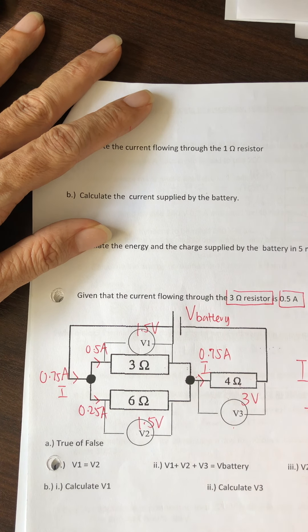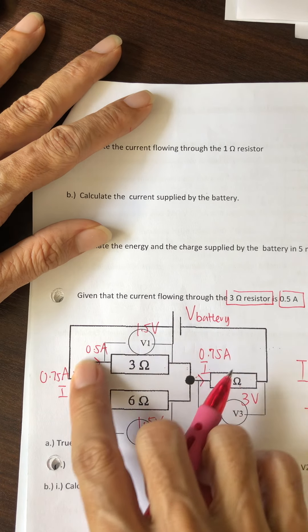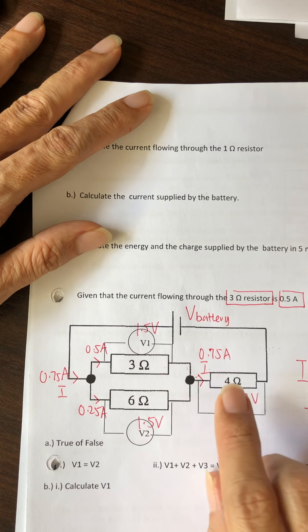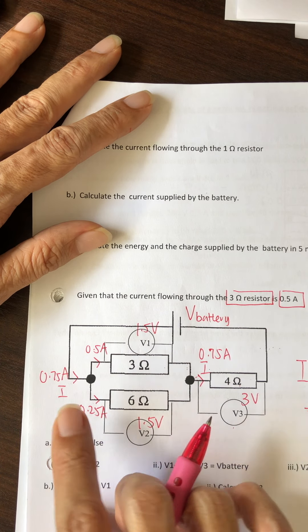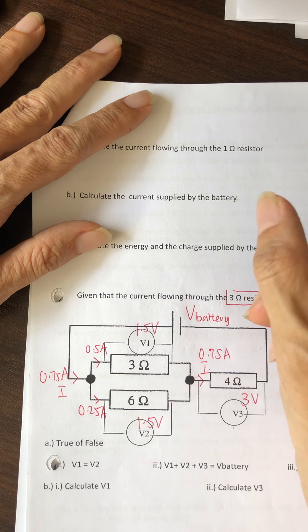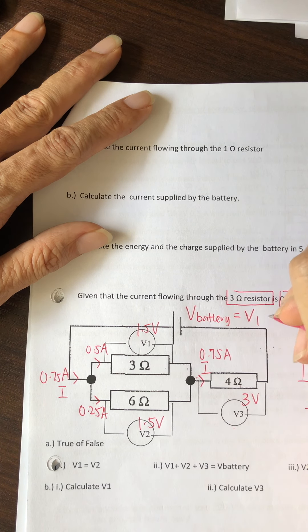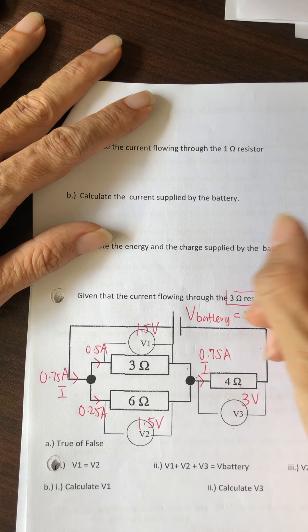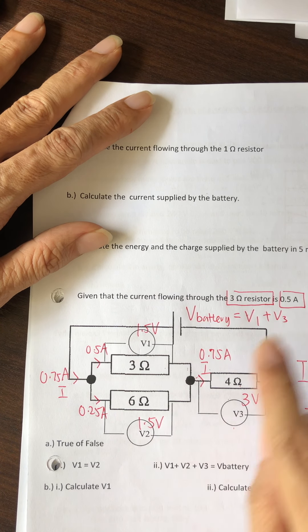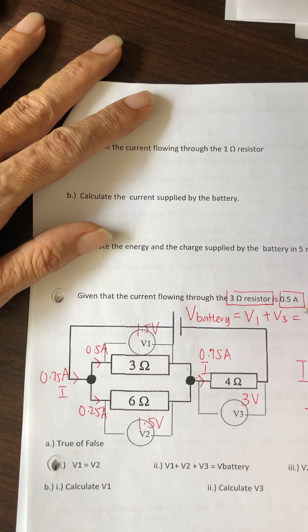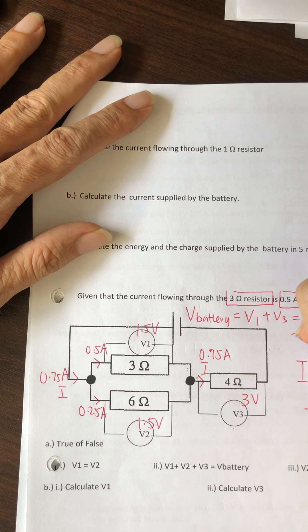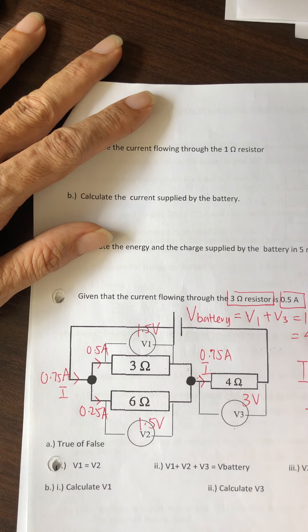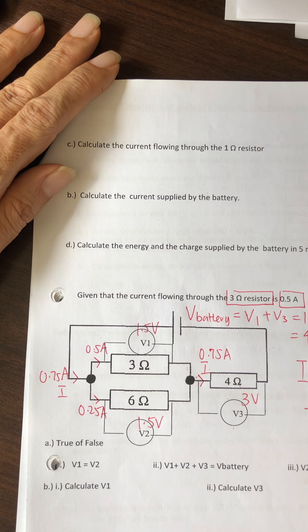This whole thing is in series to this. You can also use V equals IR, but that means you'd have to find the resistance of this times the total current. Or you can go by relationships of V. I see V1 plus V3 gives me the voltage of battery, or V2 plus V3. From here I can quickly get 4.5 volts.